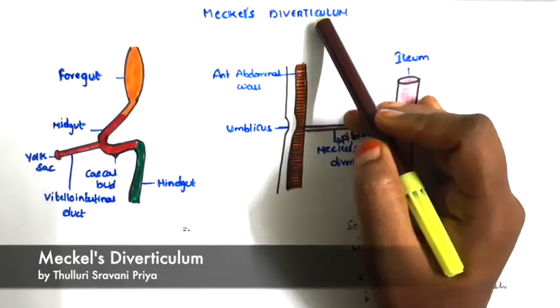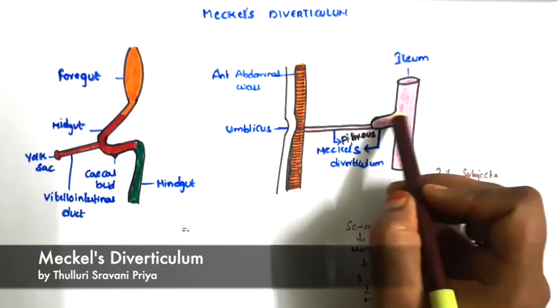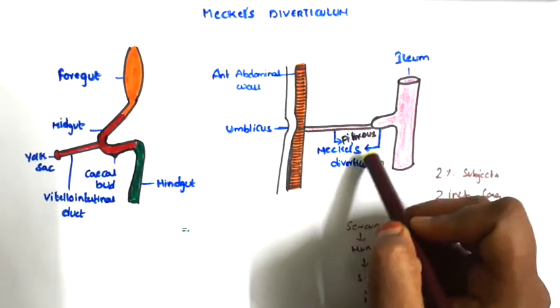Hi friends, today I will talk about Meckel's Diverticulum or Diverticulum Ilei. Meckel's Diverticulum is the persistent proximal part of the vitelline duct.